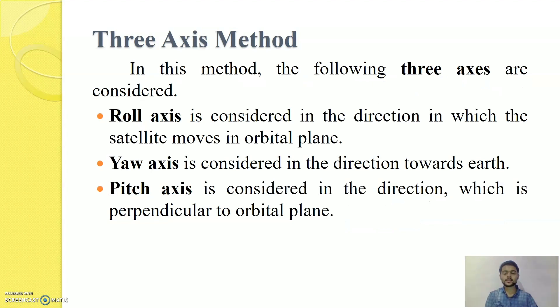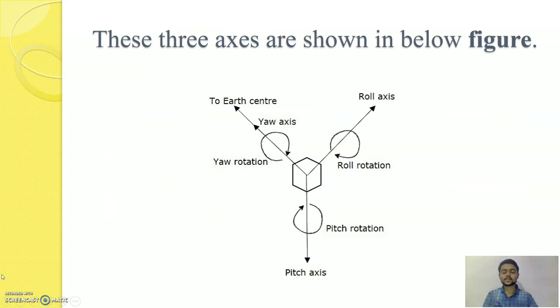In this method, following 3-axis are considered. Roll Axis, Yaw Axis and Pitch Axis. Roll Axis is considered in the direction in which satellite moves in orbital plane. Yaw Axis is considered in the direction towards the Earth. And Pitch Axis is considered in the direction which is perpendicular to the orbital plane. You can remember these 3-axis with the help of your right hand. Suppose my forefinger is in the direction of the orbital plane and my middle finger is in the direction towards the Earth's center. Then my forefinger will point the Roll Axis and middle finger will point the Yaw Axis. And my thumb which is perpendicular to the orbital plane will point the Pitch Axis. Thus, these 3-axis that is Roll Axis, Pitch Axis and Yaw Axis are shown in this diagram.